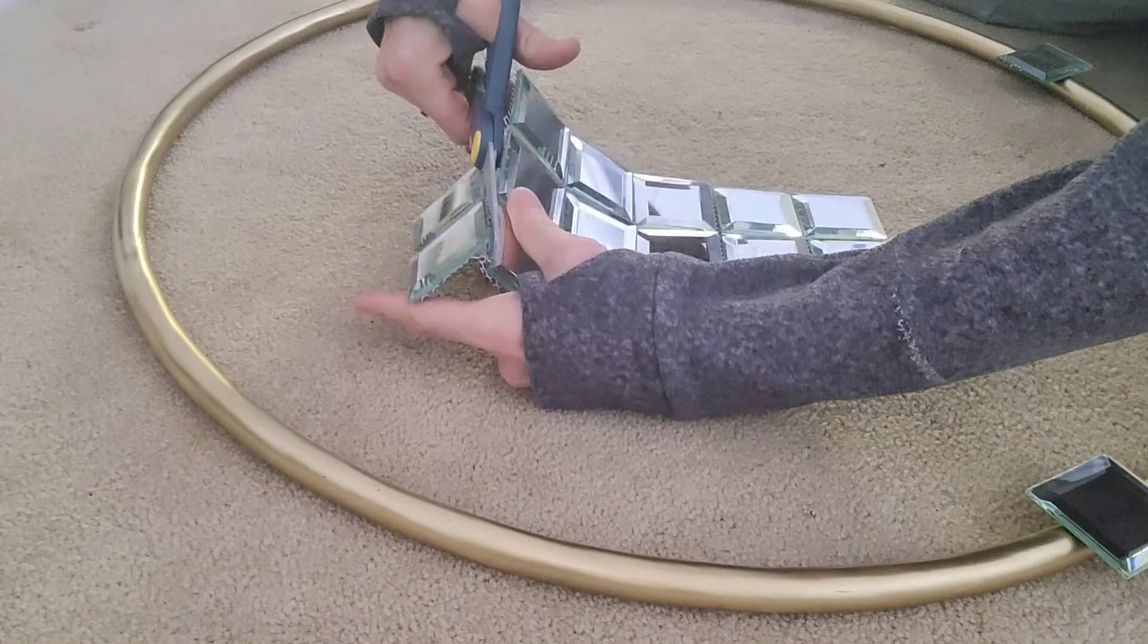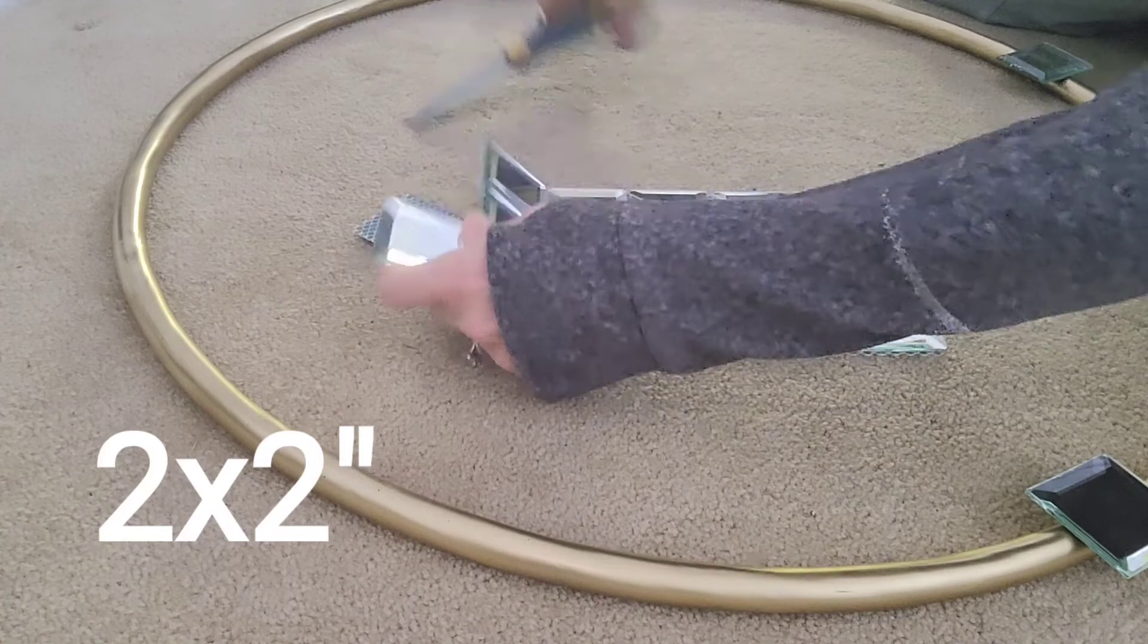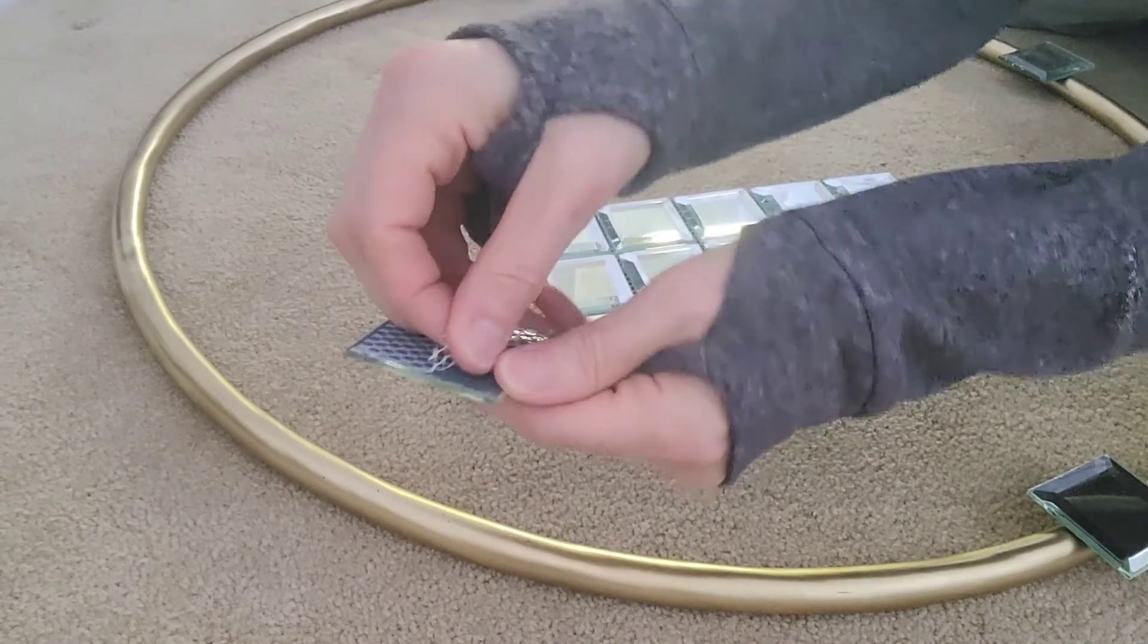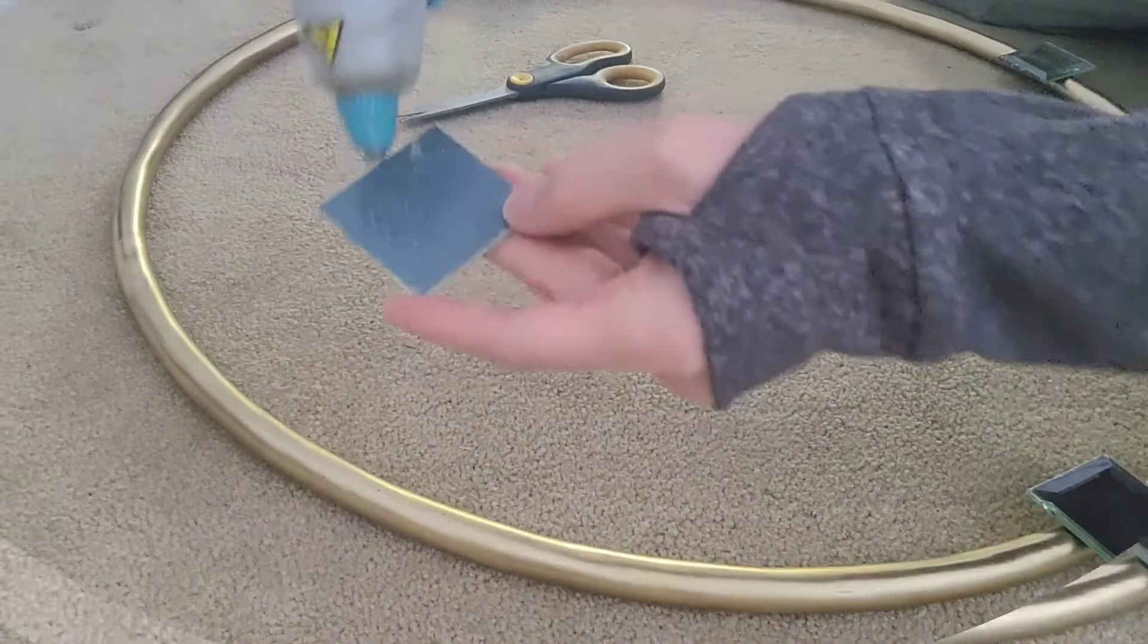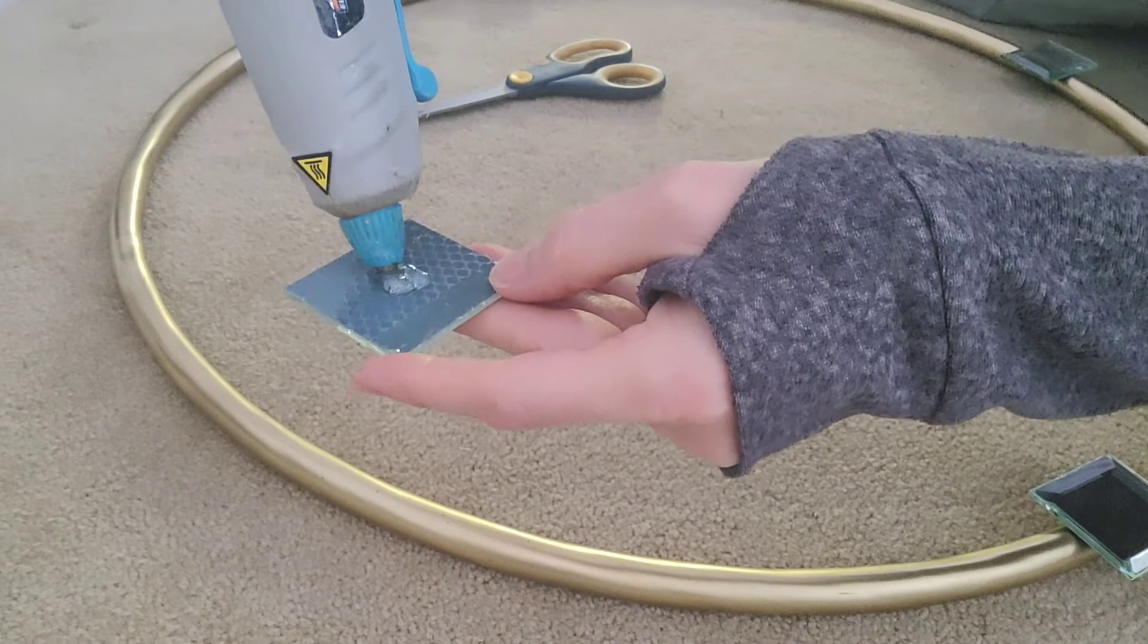Next I'm using some beveled mirror tiles that I had from my last project, the wall sconces. If you haven't seen that, please check it out. I'm using these as my markers for the 3, 6, 9, and 12 positions.